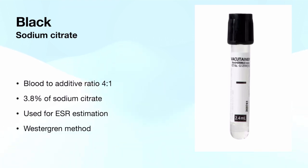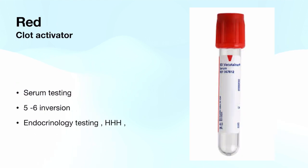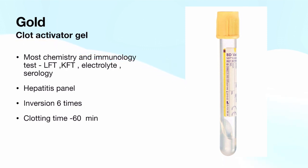The red tube is required for serum testing. It is used for LFT, KFT, thyroid profile, other endocrine testing, and triple H. It requires 5 to 6 inversions. The gold tube — note this is not the yellow tube — has a clot activator gel. It is also used for LFT, KFT, electrolytes, and serology. The clotting time is 30 to 60 minutes and it requires 6 inversions.